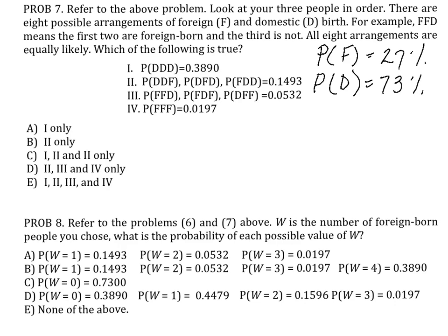Applying the multiplication rule for independent events, because knowing that someone is domestic-born on the first selection doesn't affect the probability of someone being domestic-born in the second selection, or the third selection for that matter. So we're going to use the independence rule for probabilities.